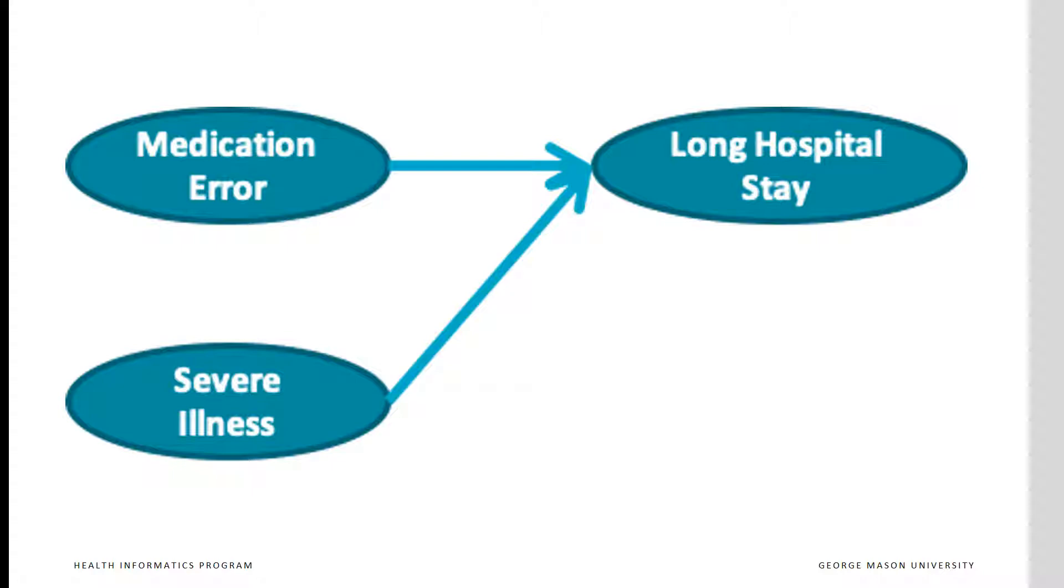Note that this graph also shows that the probability of medication error is independent of severity of the patient's illness. This is implied by the fact that there is no link between severe illness and medication error. If this is not true, then the network must be redrawn.